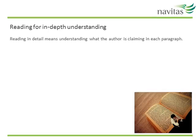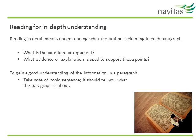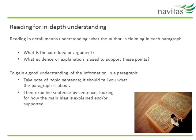After skimming and scanning, you should know what the topic of the text is, what the general structure of the text is, and whether you want to read this text or parts of it in more detail. The next step is to move to reading in detail at the level of individual paragraphs. For each paragraph, make sure you really understand what the author is claiming. The best way to do this is to look at the topic sentence which should tell you what the paragraph is about. Then examine sentence by sentence, looking for how the main idea is explained or supported.